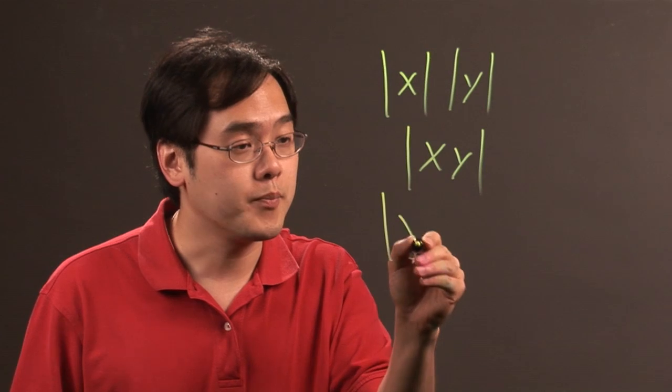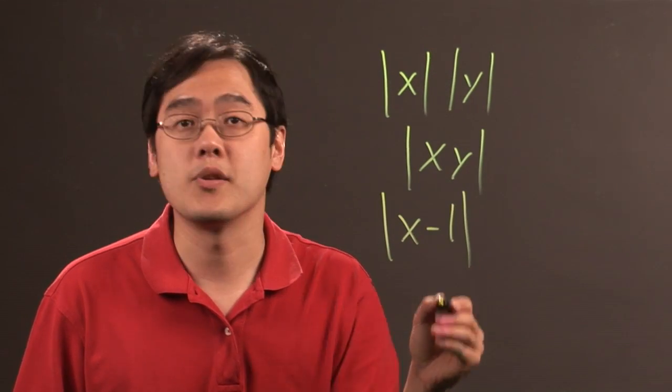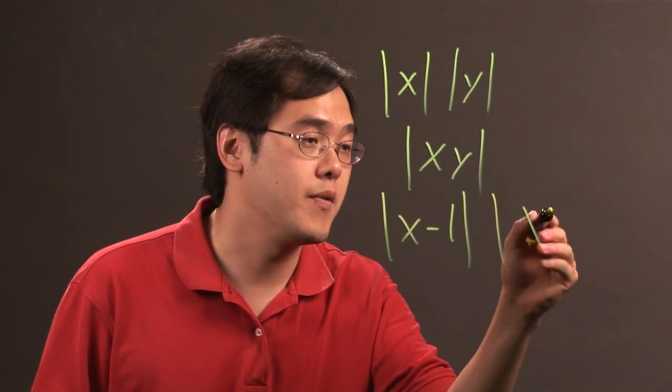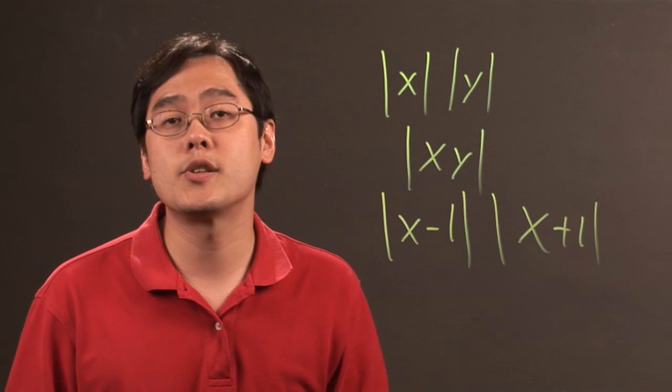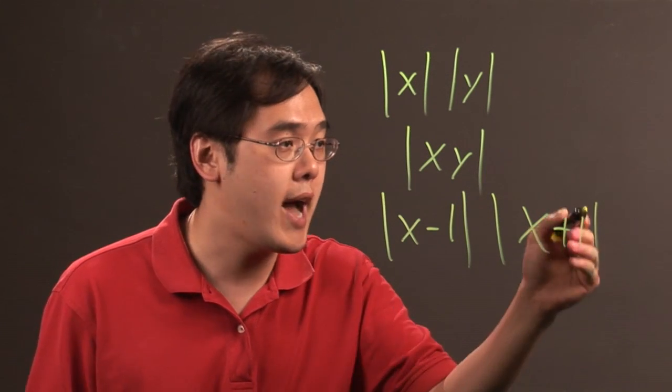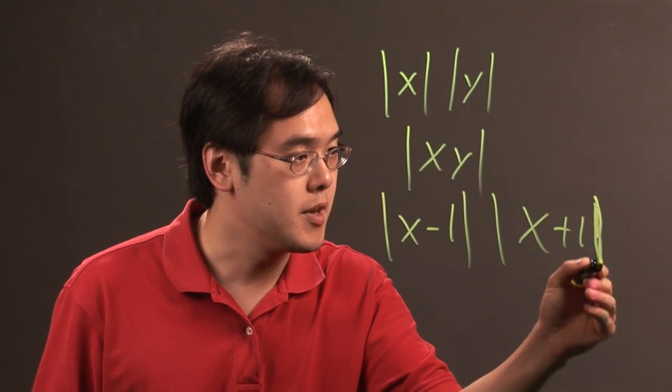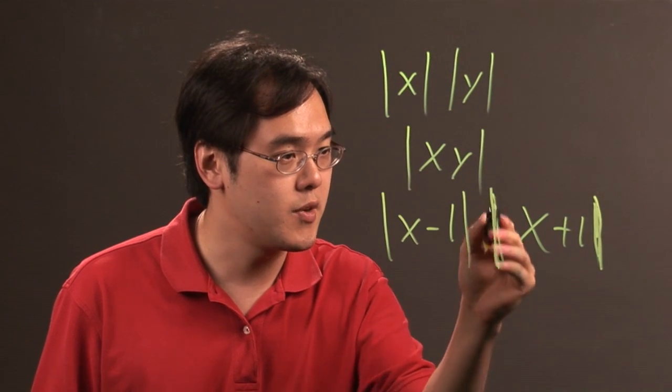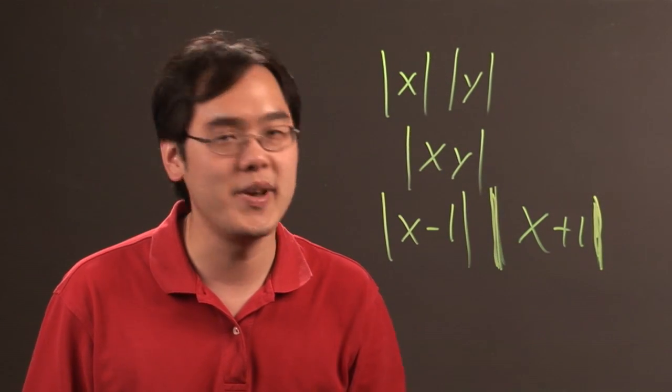If you have something such as absolute value of x minus 1 times absolute value of x plus 1, again because they're both distances, they're both absolute values, they're both going to be positive. Let me just accentuate the bars here a little bit.